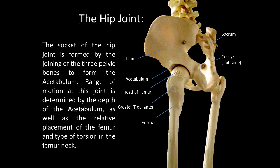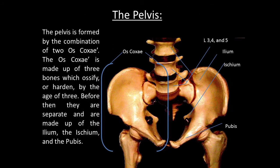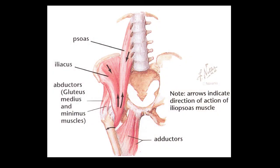The socket of the hip joint is formed by the joining of the three pelvic bones to form the acetabulum. Range of motion at this joint is determined by the depth of the acetabulum, as well as the relative placement of the femur and type of torsion in the femur neck. The pelvis is formed by the combination of two os coxae. The os coxae is made up of three bones which ossify or harden by the age of three. Before then, they are separate and made up of the ilium, ischium, and pubis. In this illustration, the arrows indicate direction of action of the iliopsoas muscle. These are all very deep muscles and play a vital role in stabilizing the structure of the hip joint with the rest of the body.